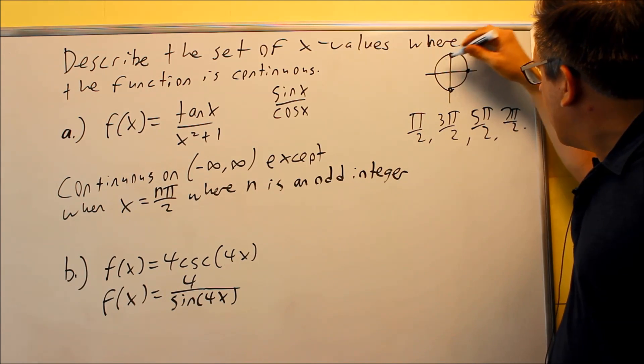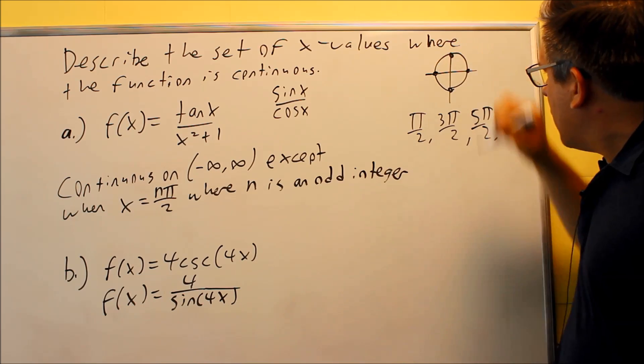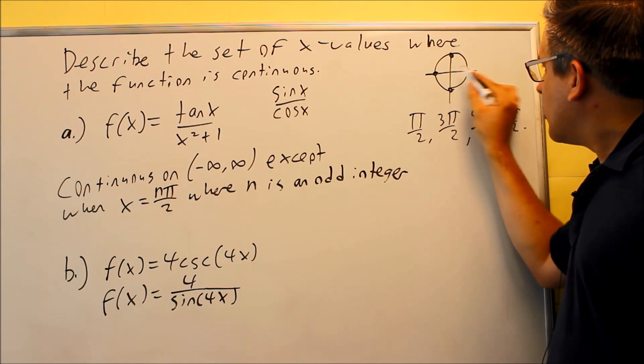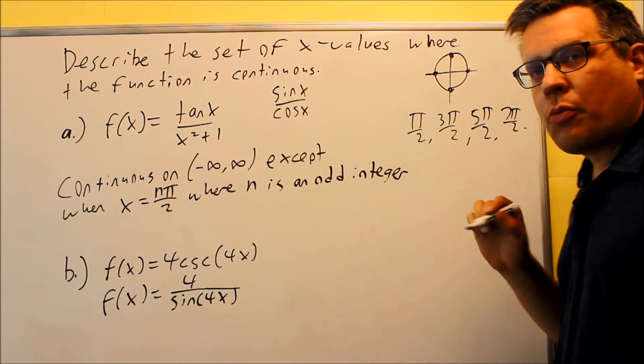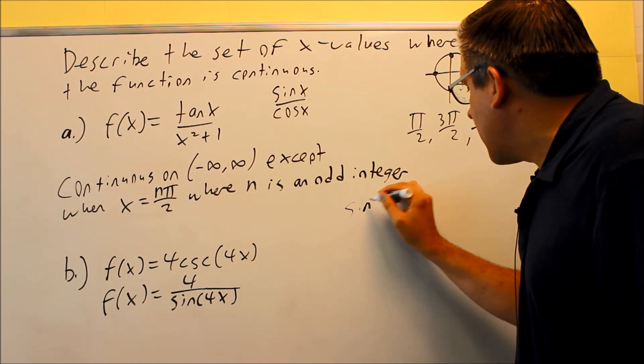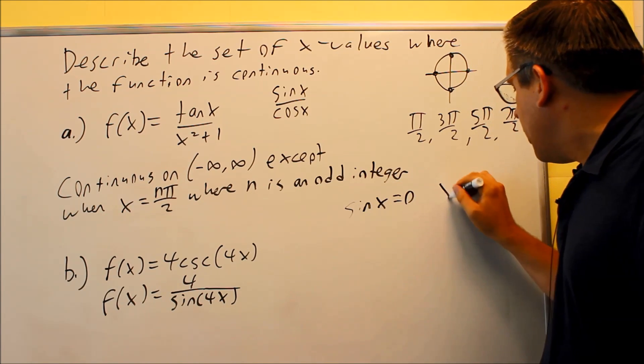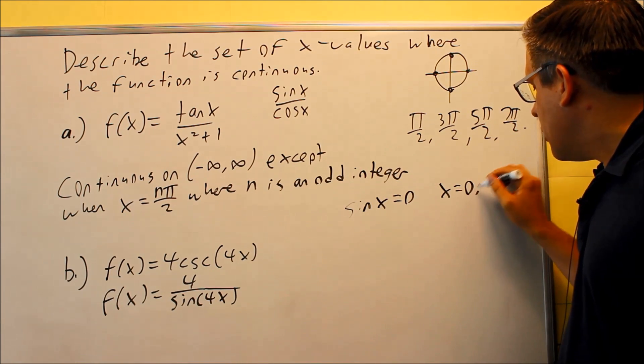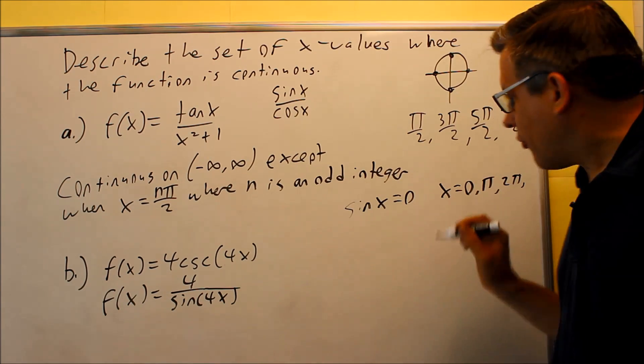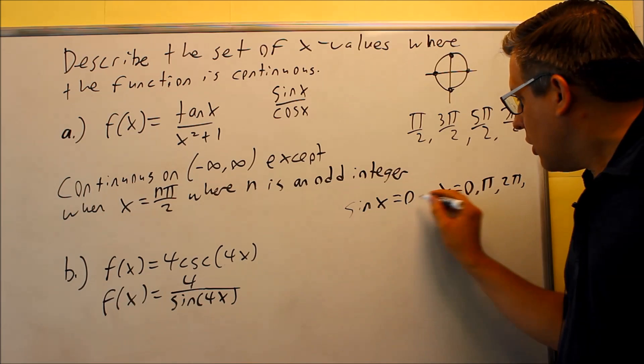So sine x right here is referring to these two places on the unit circle. Your sine is a y value. The y values are zero at these two places, and that's going to be at zero pi, two pi, and so forth. So if I have sine x equals zero, your x is going to be equal to zero pi, two pi, three pi, and so forth, continuing all the way through.